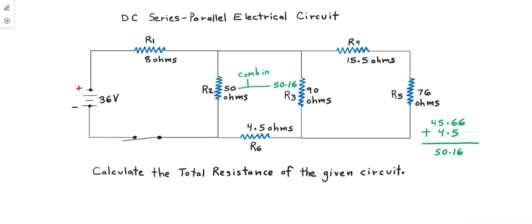And then again, we combine the next parallel resistor with the combination. Again, we use the same methodology. This computes to 25.06.